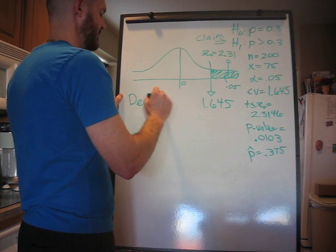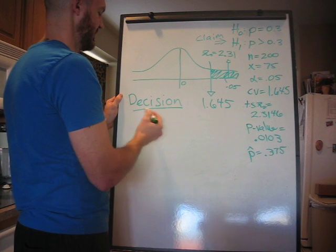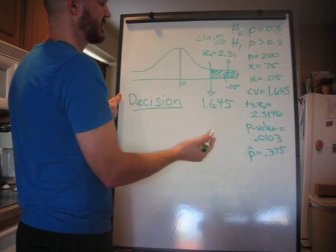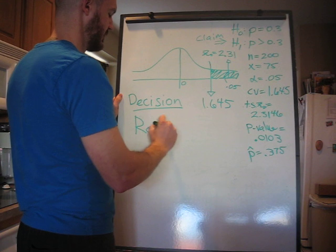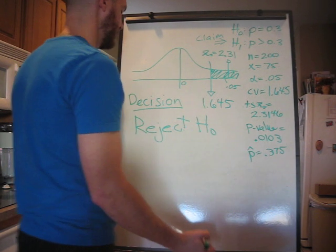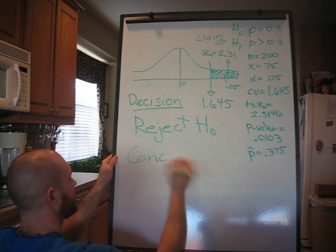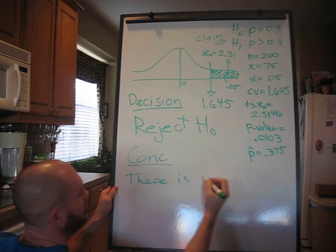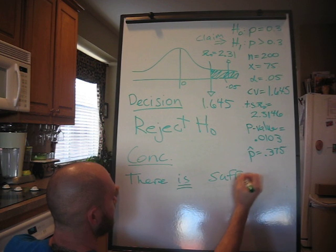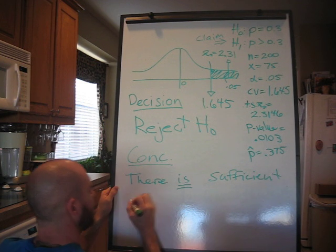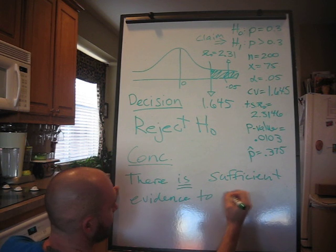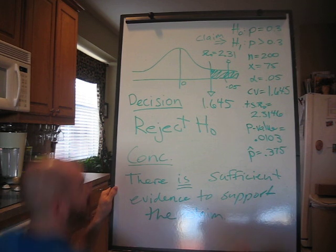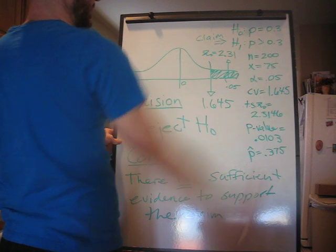So, our decision is to reject H0. And our conclusion is that there is sufficient evidence to support the claim. Claim being that the proportion is greater than 0.3.